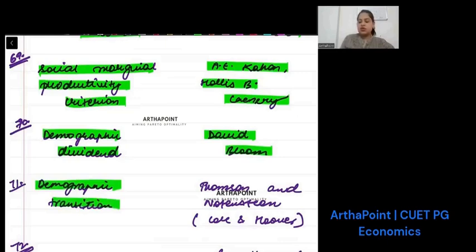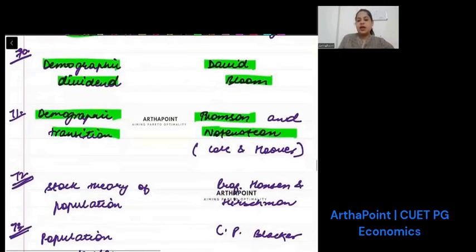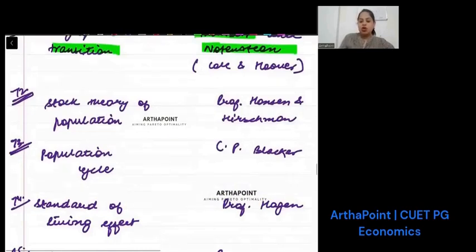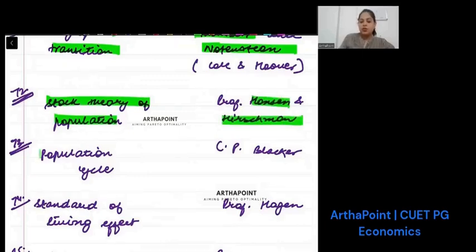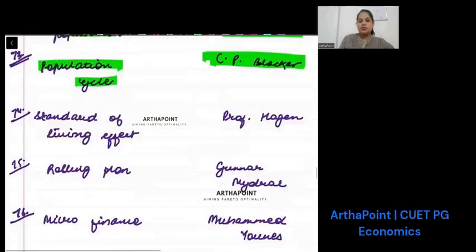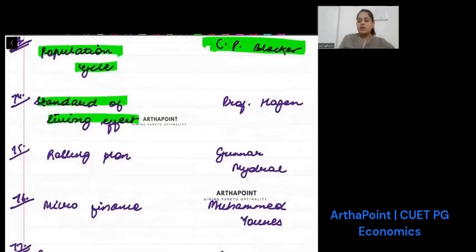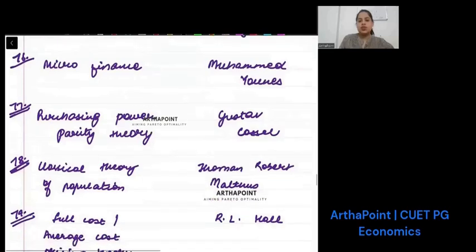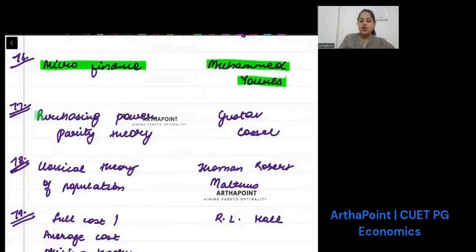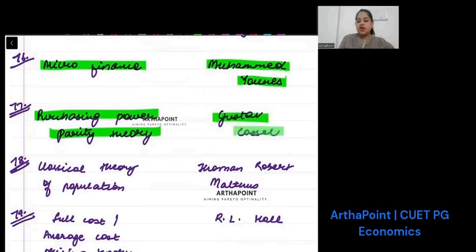Demographic transition is given by Thompson and Notestein, and later by Coale and Hoover. Stagnation theory of population is given by Hansen and Hirschman. Population cycle is given by C.P. Blacker. Standard of living effect is given by Professor Hagen. Rolling plan is given by Gunnar Myrdal. This is important. Microfinance is given by Muhammad Yunus. Purchasing power parity theory is given by Gustav Cassel.